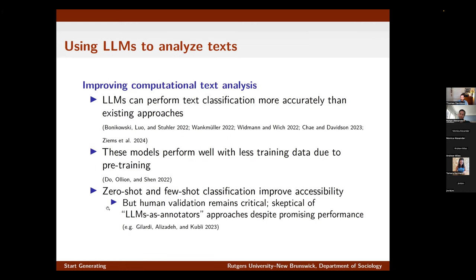What I'd like to start talking about is the use of these methods for computational text analysis, and here I'm thinking particularly about text classification — taking a machine learning model and training it to detect something like stance in political speech or hate speech in tweets. We've seen several papers showing that large language models can perform these tasks much more accurately than existing approaches, and they can potentially do this with less training data than previously needed.